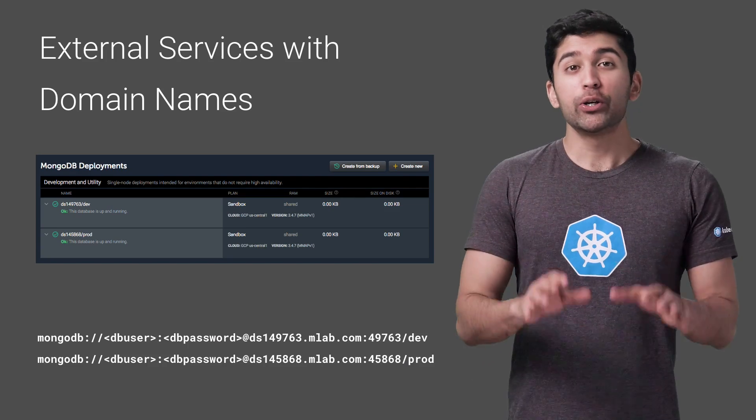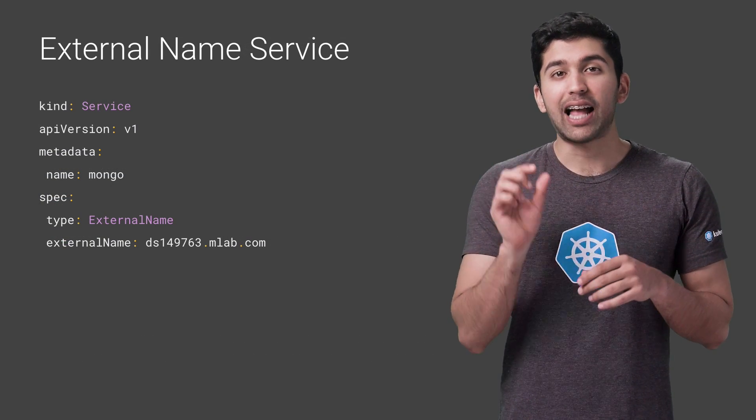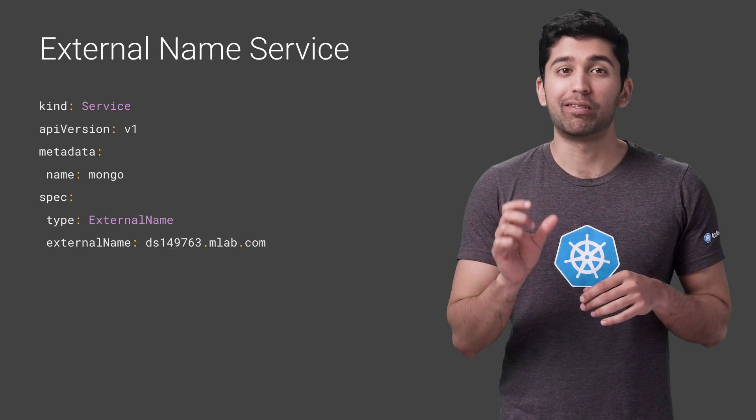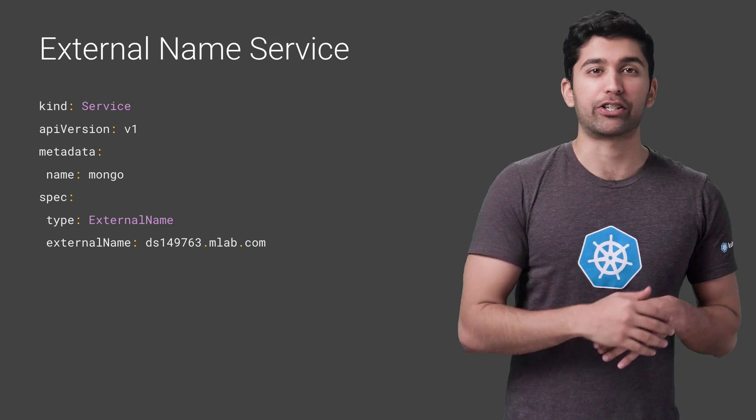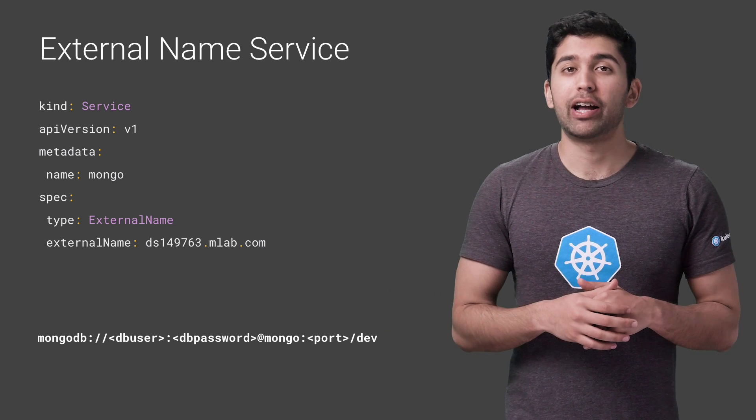Let's use Kubernetes to abstract over this. You can create an ExternalName Kubernetes service, which will give you a static Kubernetes service that redirects traffic to the external service. This service will do a simple CNAME redirect at the kernel level, so there's very minimal impact on your performance, and you can use a much more simplified connection string.